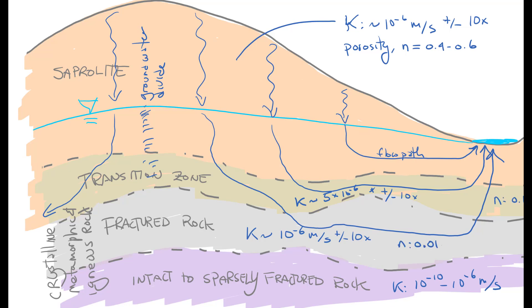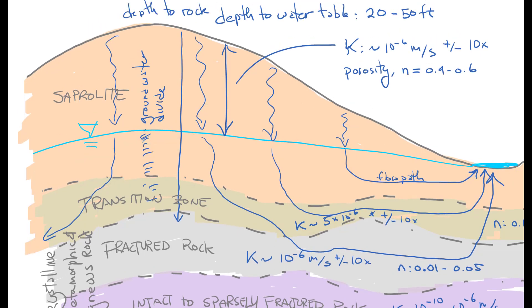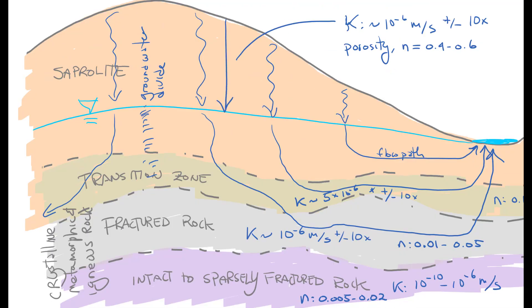Fractured rock is about the same hydraulic conductivity, but it has a much lower porosity. Intact sparsely fractured rock can have hydraulic conductivity as low as 10 to the minus 10, but it could range up to 10 to the minus 6, depending upon the degree of fracturing. The porosity of the intact sparsely fractured rock is going to be quite low, 0.005 to 0.02, primarily dominated by the porosity of the crystalline rock itself.